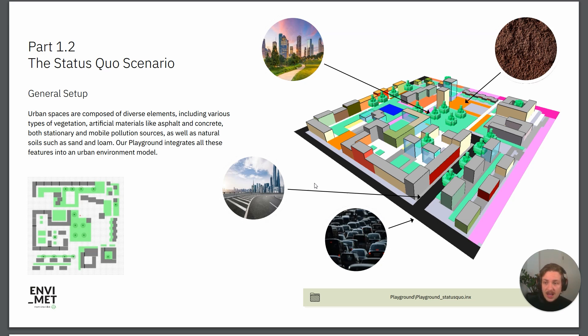Looking at the different scenarios, we have a status quo scenario. As you can see, it contains buildings of different materials, different surfaces, for example this asphalt street here. We have some unsealed soils here as well, some concrete soils and also some vegetated soils, and we have some trees standing here and so on, a little pool for example as well.